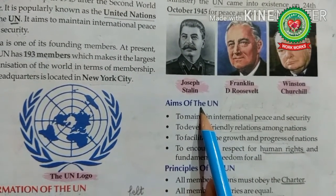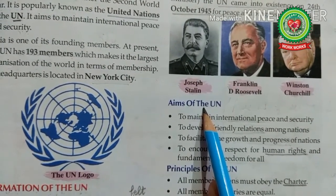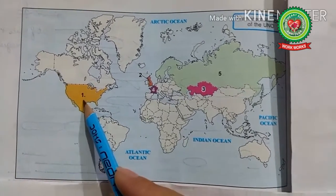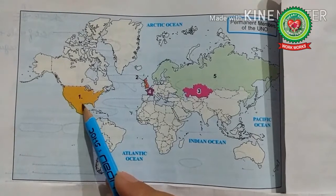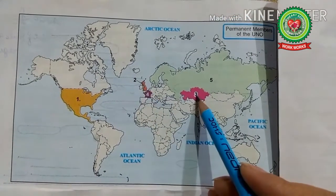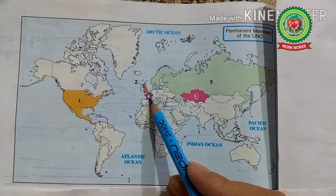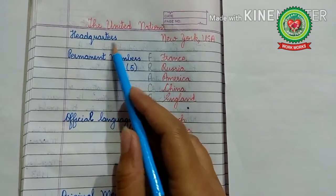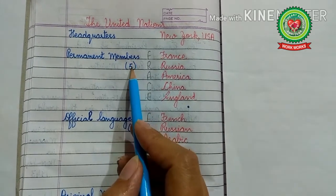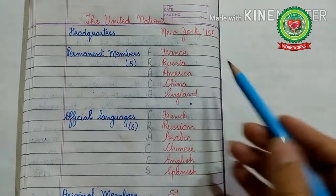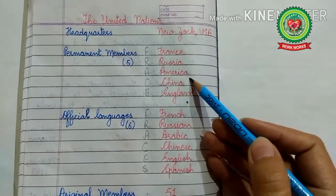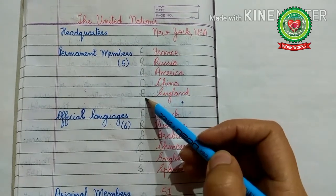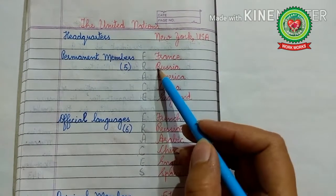Let us recall important points about the formation of the United Nations. The five permanent member countries are: the United States of America, England, China, France, and Russia. The UN headquarters is in New York, USA. You can remember the five permanent members using the word 'FRACE': F for France, R for Russia, A for America, C for China, and E for England.